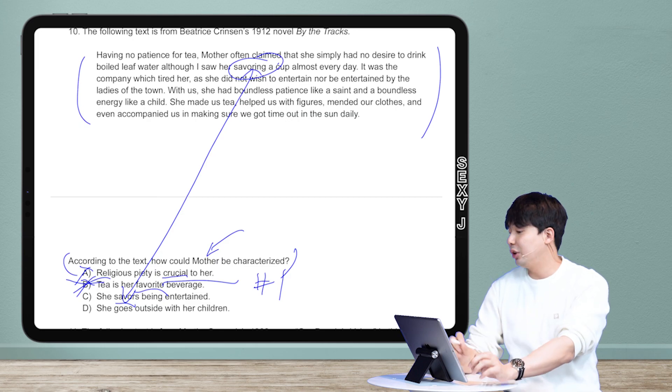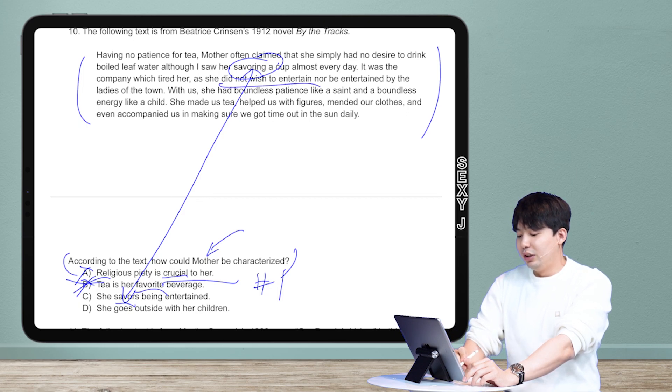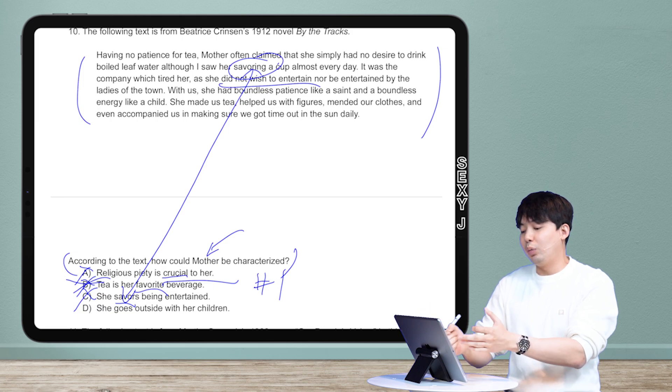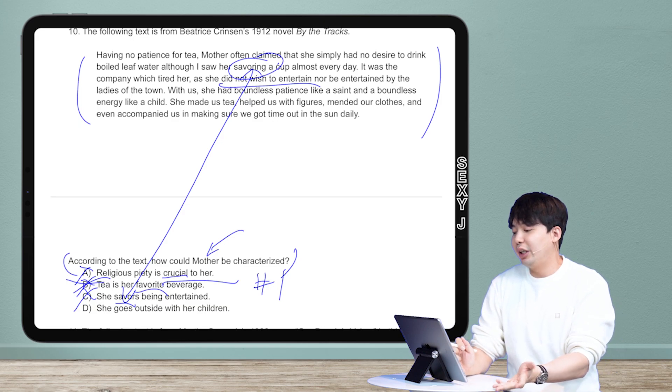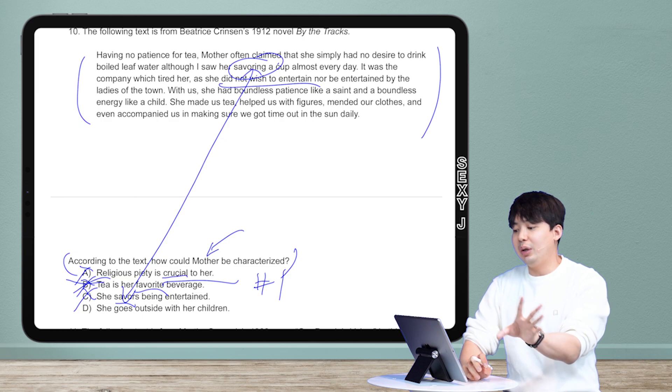It's just lifting the words straight from the text which as you guys know is a very likely indicator of a trap answer. It was the company which tired her as she did not wish to entertain. So she does not like to entertain. Answer C also, you see they put in the word savor, they put in the word entertain. Why? Because they were in the passage but they just mismatched them. And savor means she likes it but we have here she doesn't like being entertained. So by elimination you could be like oh could I just go with D and move on? Well let's be a little bit more sure than that.